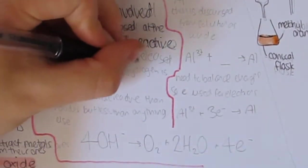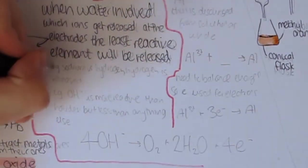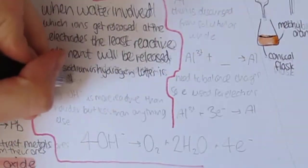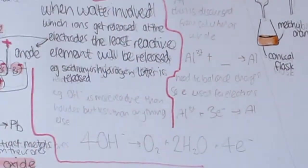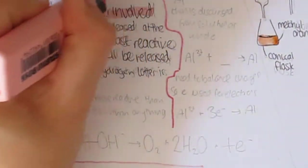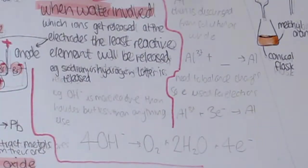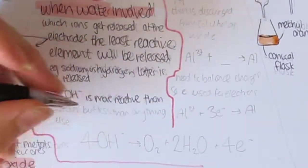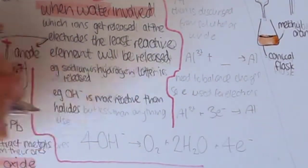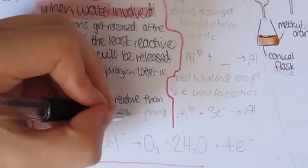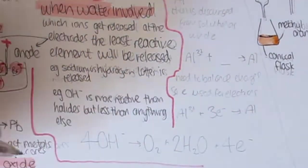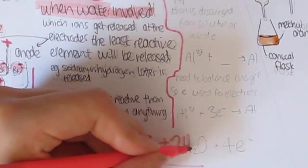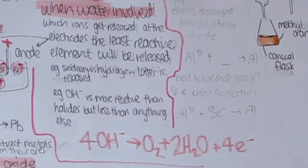At the anode, the same rule applies. OH- is the more reactive substance, so if halides are present they will get released. If not, oxygen and water will get released. For example, copper sulfate solution: the copper is released and coats the cathode, and water and oxygen are released in the anode which can be seen as bubbles. The important half equation here to learn is 4OH- makes O2 plus 2H2O plus 4e-.